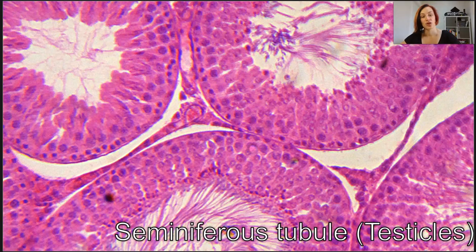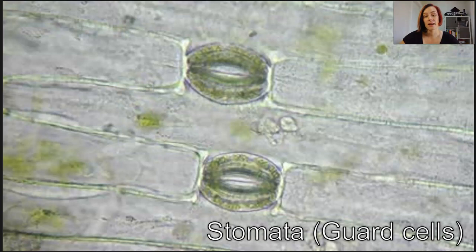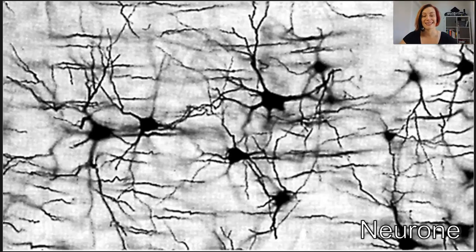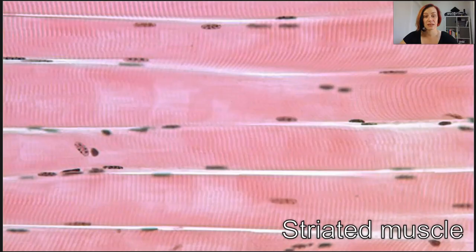These are seminiferous tubules in the testicles where they mature sperm. These are stomata, specialized cells allowing for gas to enter and exit the leaf. Our neurons have long extensions to pick up and send nerve signals.